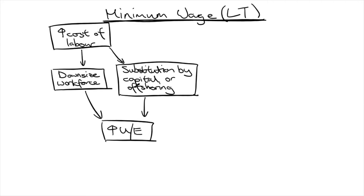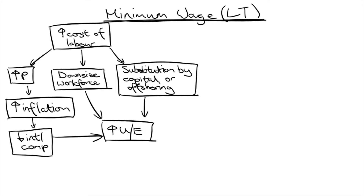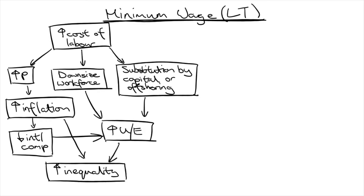Businesses could also respond by passing on the higher costs by increasing prices to consumers. Not only does this lead to cost-push inflation, which erodes the purchasing power of wages, but it also means a loss of international competitiveness. This causes Australian businesses to fail in the face of foreign competition and leads to unemployment. When all of this unemployment and inflation happens, it mostly affects those with less bargaining power — unskilled teenagers or migrants. These already low-income earners are the first to lose their jobs or have difficulty bargaining for a higher wage to keep up with inflation. Therefore, inequality worsens.